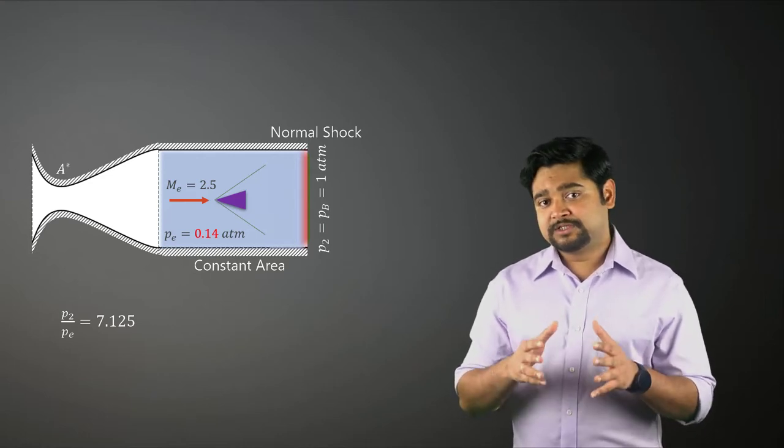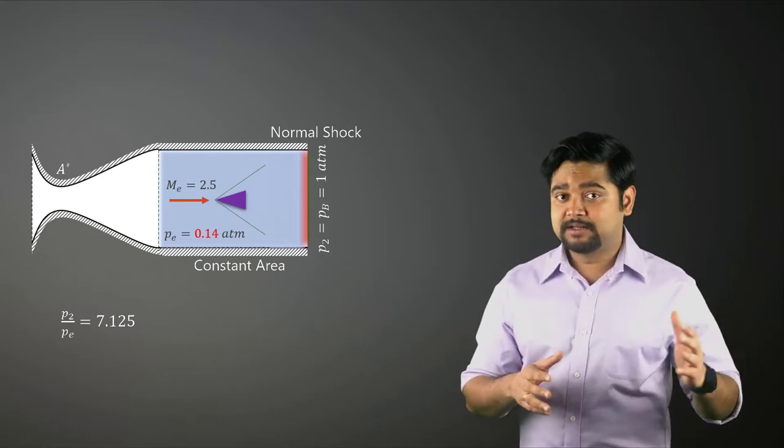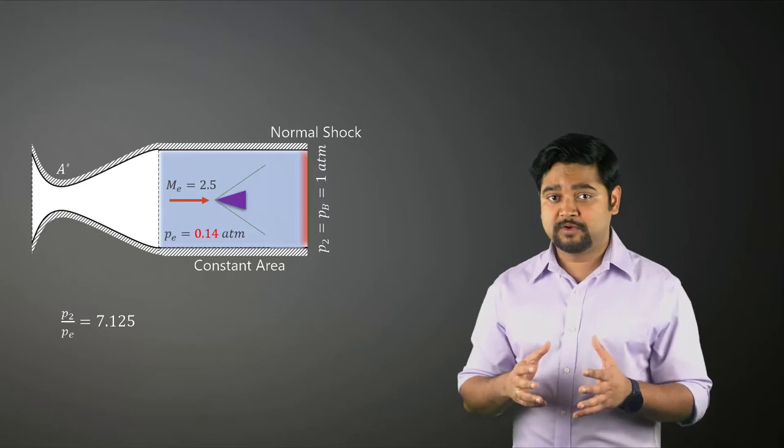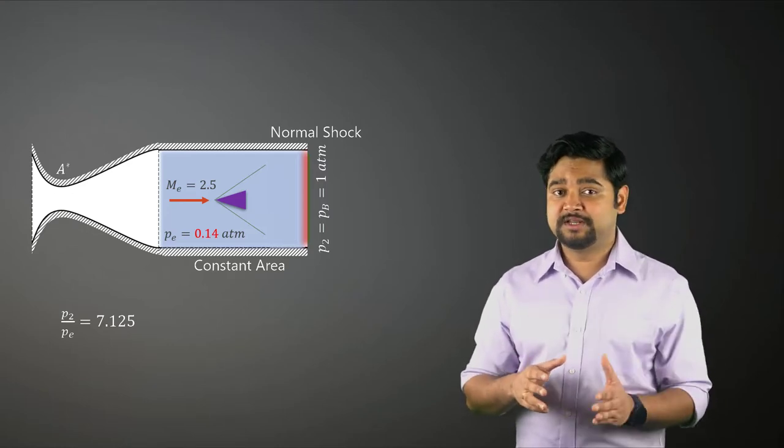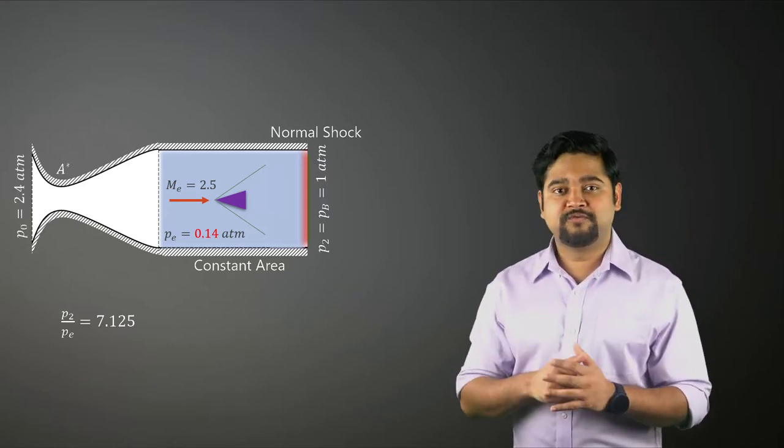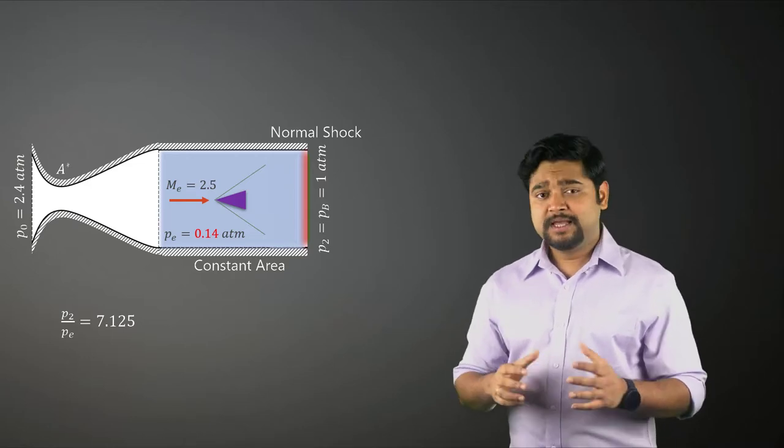Therefore, the pressure required at the nozzle inlet to ensure proper isentropic flow reduces from 17 atm to 2.4 atm. In this case,